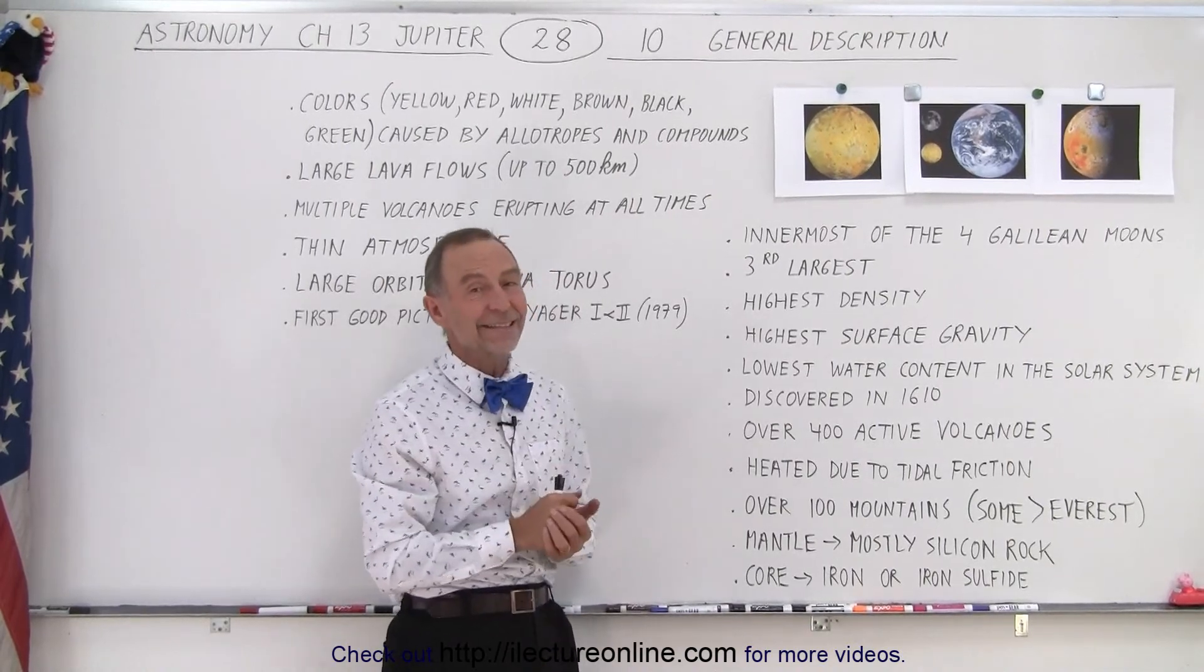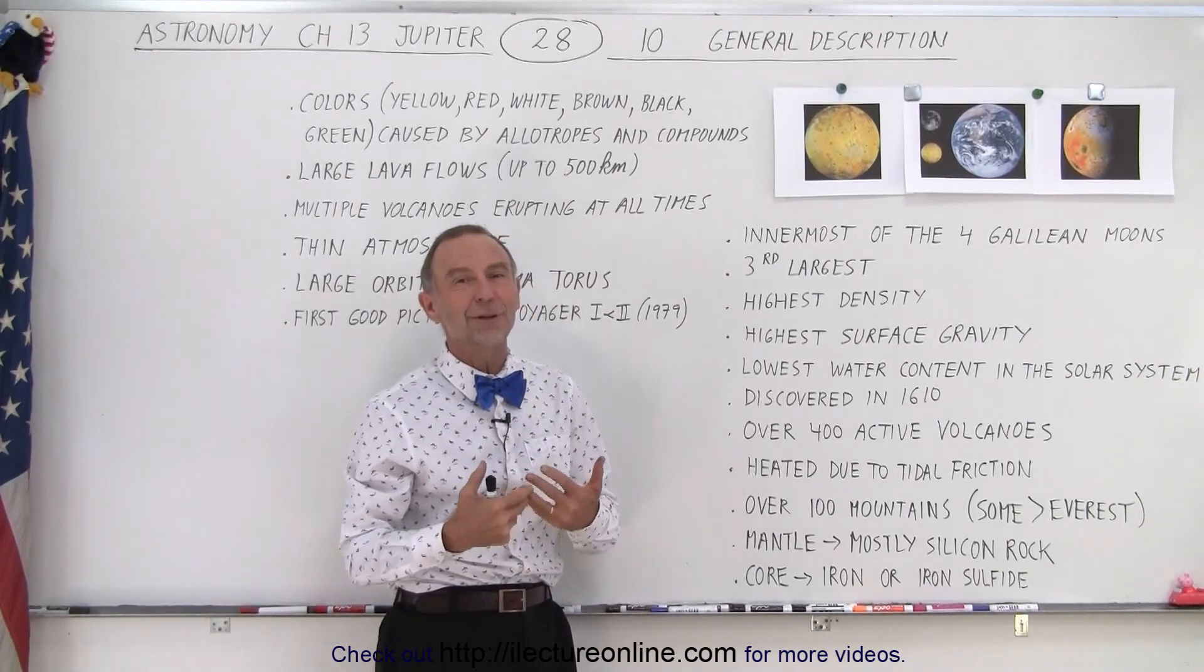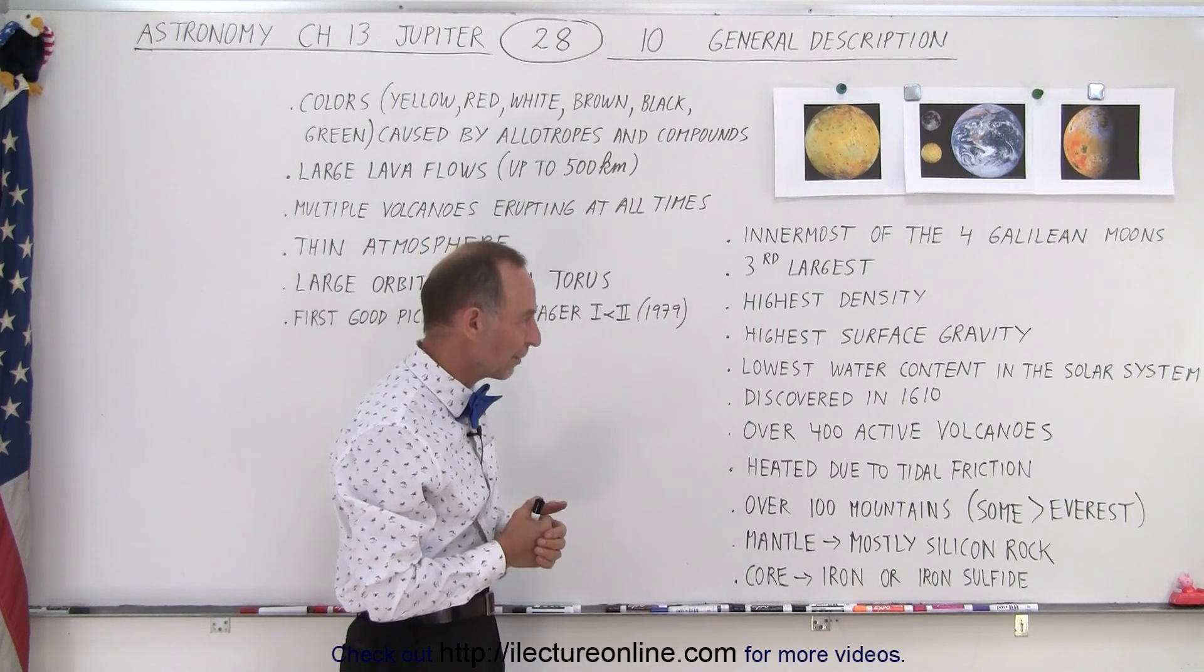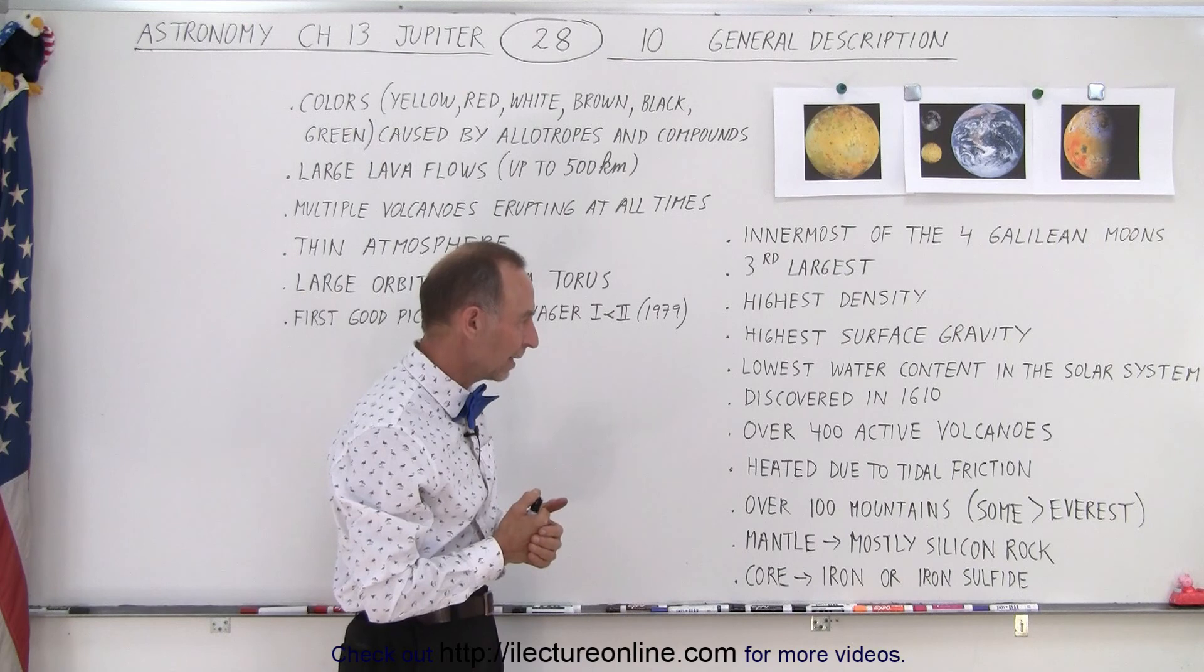It was discovered in 1610. Of course, it was discovered along with the other three Jovian planets. And therefore, they all were discovered in 1610 by Galileo.